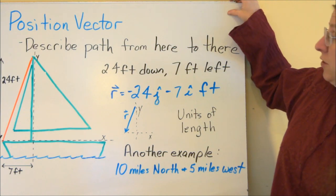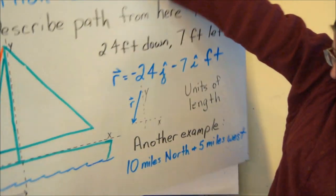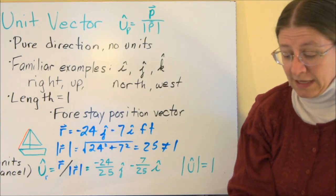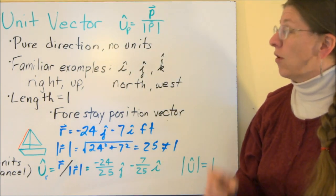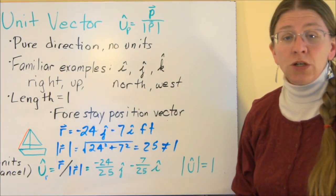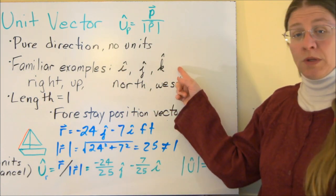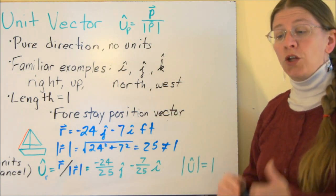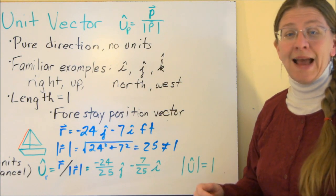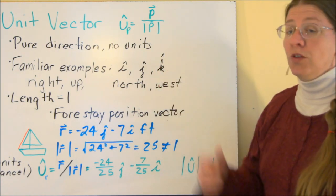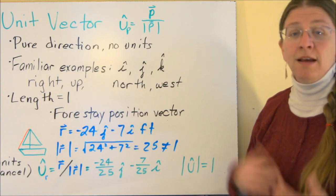So that's a position vector. A unit vector is, by definition, a vector that has length 1. It's pure direction. It doesn't have any units at all. So you're familiar with i, j, and k. These are unit vectors along the axes. i is the unit vector along the x-axis. j is the unit vector along the y-axis, and so forth.